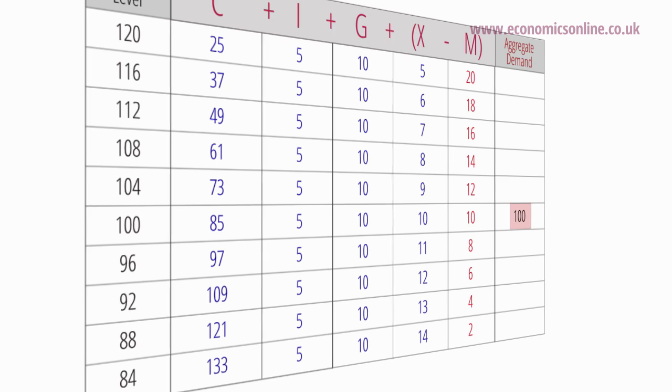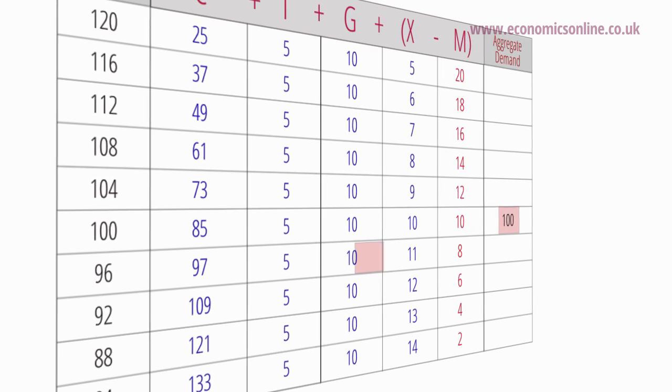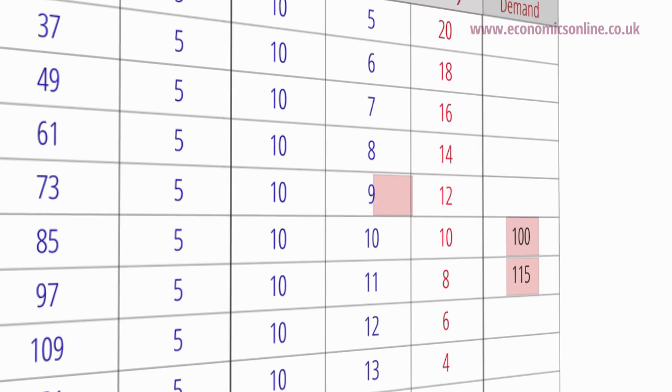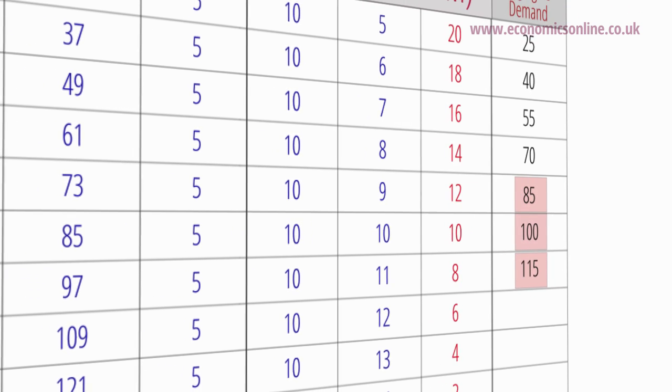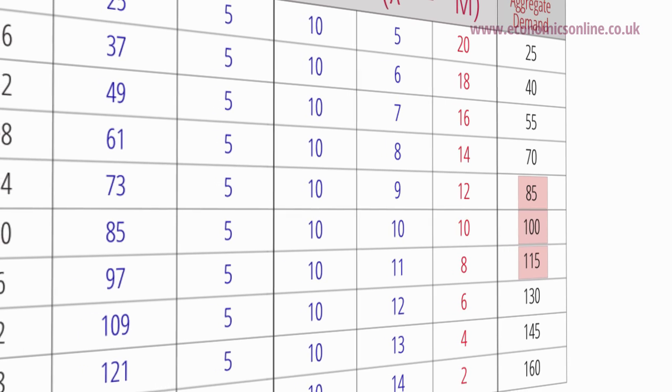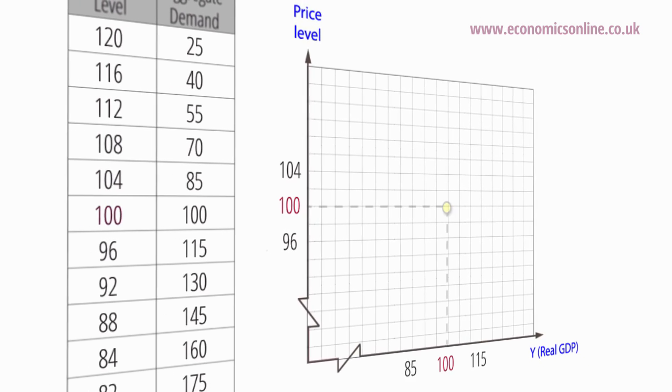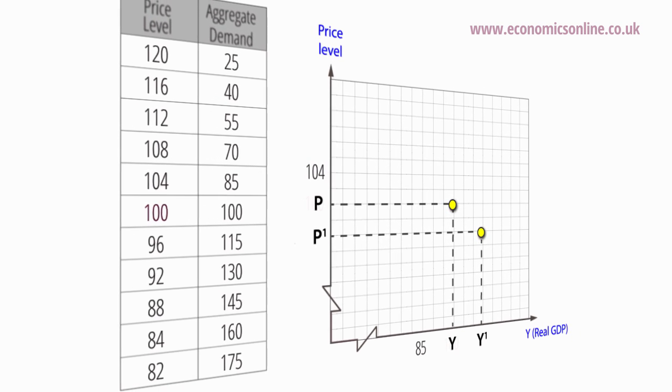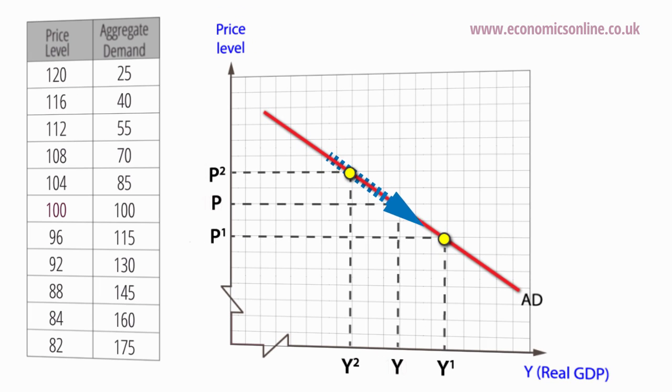At a lower hypothetical price level, say at 96, AD increases to 115 billion, and at a higher price level at 104, AD falls to 85 billion. Looking at the relationship between AD and the price level graphically, we see that an AD curve will slope downwards. A fall in the price level from P to P1 will cause the quantity demanded to increase from Y to Y1. The downward slope of AD is explained in terms of the following effects.